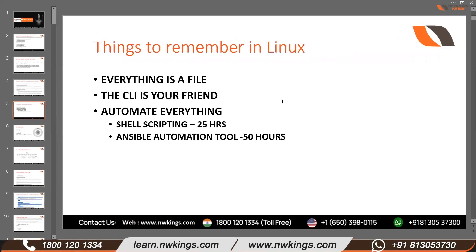In Linux, everything is a file. When we say a hard disk — a hard disk is hardware — but in Linux it is represented as a file. So in Linux, every piece of hardware, even a hard disk connected to a Linux server, is represented as a file.